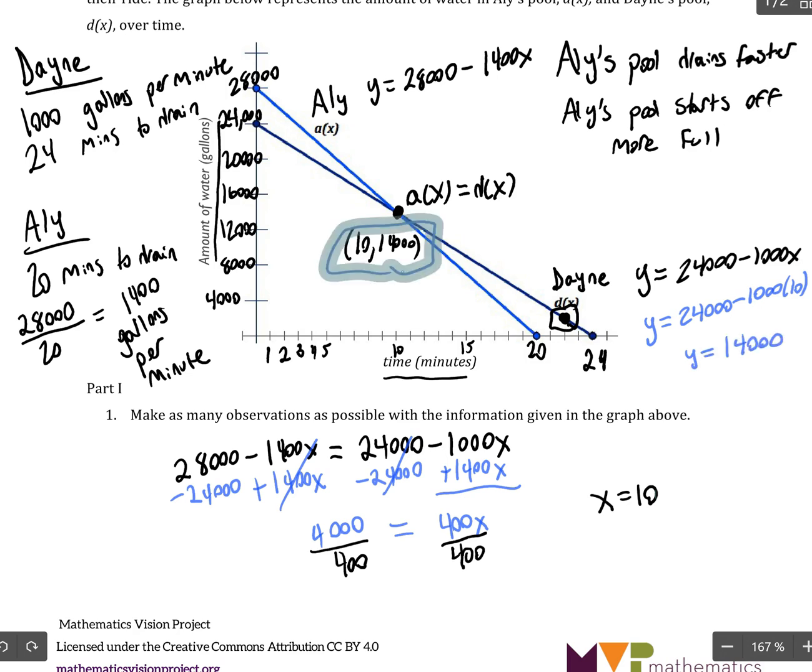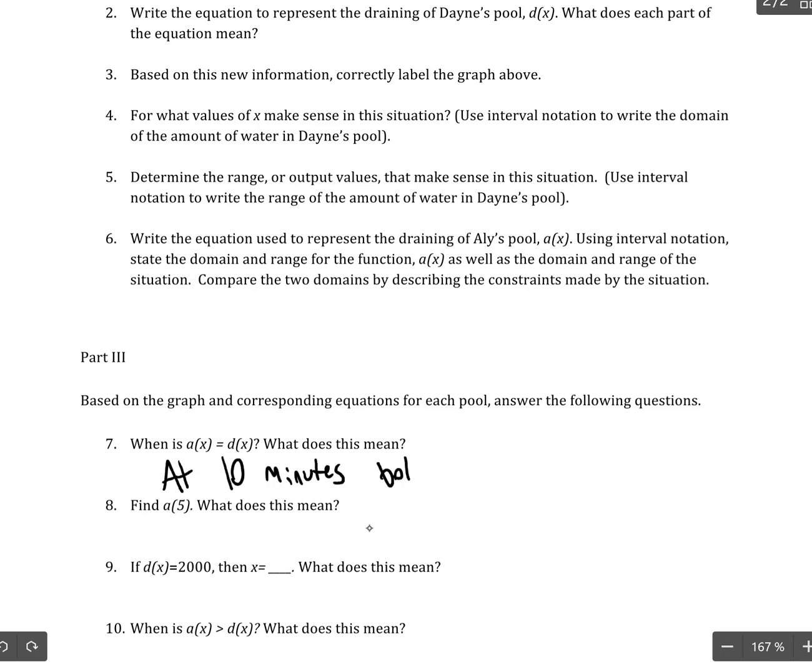So, this point here is correct. So, at 10 minutes, both pools will have 14,000 gallons of water.